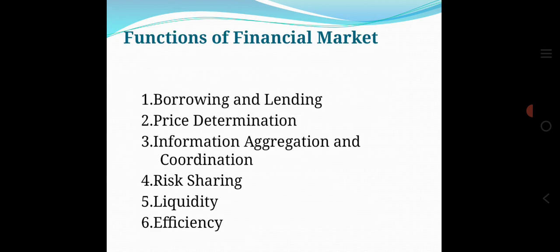Functions of Financial Markets: There are six basic functions in the financial markets, briefly listed below. Number one: borrowing and lending. Number two: price determination. Number three: information aggregation and coordination. Number four: risk sharing. Number five: liquidity. Number six: efficiency.